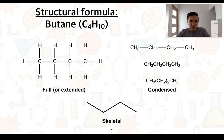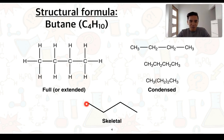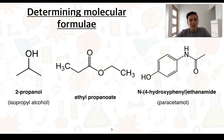Based on the skeletal structural formula, each of the points is a carbon atom and we can see how many bonds it has with other carbons or even other atoms that aren't hydrogen. From there we can work out how many hydrogens are bonded to it, given that carbon must form four covalent bonds to be stable. On this slide we're going to look at how we can determine the molecular formula of a range of skeletal diagrams.